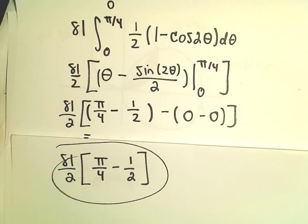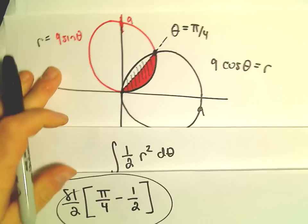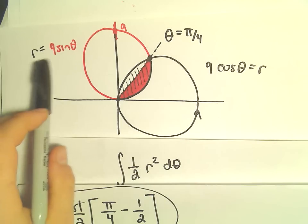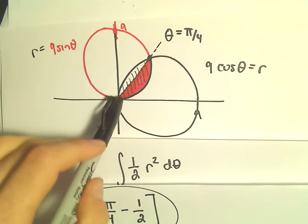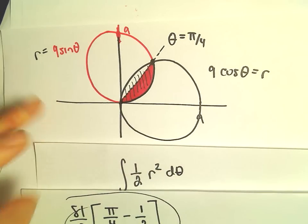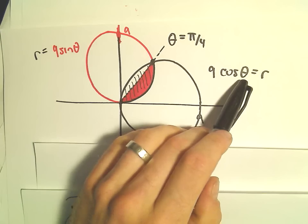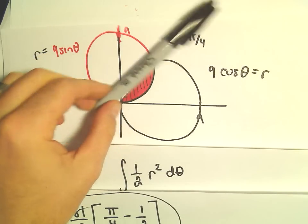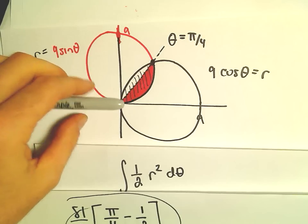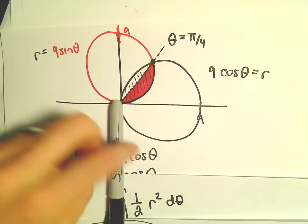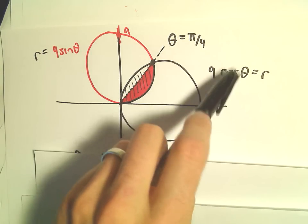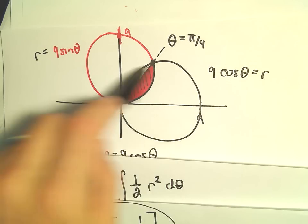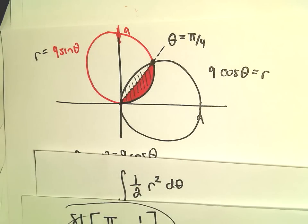To go back to this, graphing 9 cosine theta, 9 sine theta. Hopefully you remember that those are circles. If not, just pick points for theta. Let theta equal 0, let theta equal pi over 2, let theta equal pi, let it equal 3 pi over 2. Pick values of theta, compute r, plot those polar points, and hopefully you'll end up with a circle at the end.